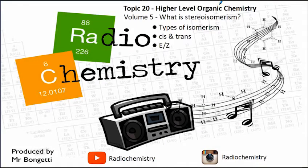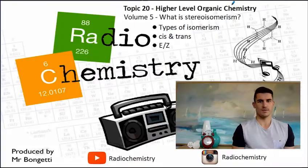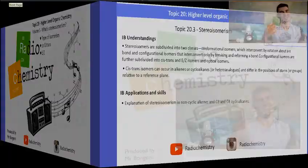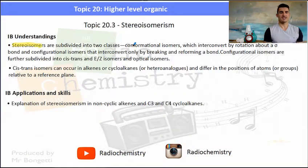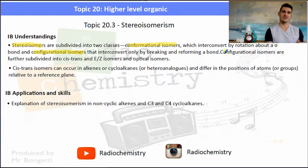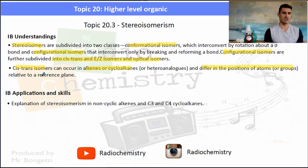Welcome to another video — this is exclusive high-level organic chemistry content, volume 5. We look at what stereoisomers are, the types of isomers, cis and trans, and EZ configurations. The IB understandings and applications: stereoisomers are divided into two types — conformational isomers and configurational isomers — and we talk about the difference between those. The configurational isomers are cis and trans and EZ configurations.